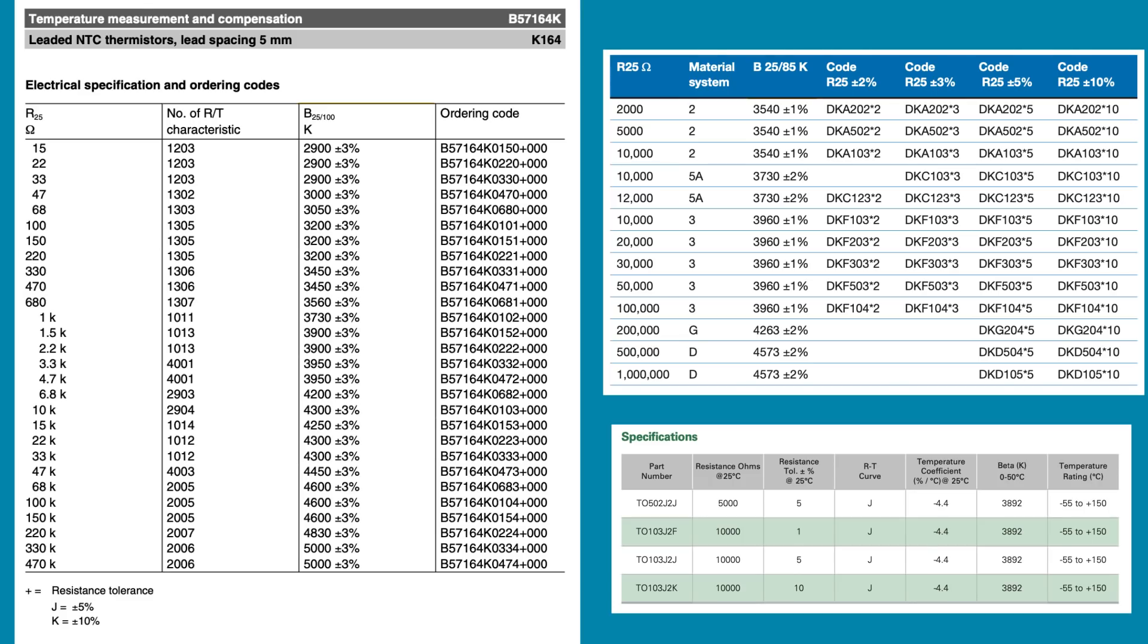On an NTC thermistor datasheet, you can find the beta value within a certain temperature range. Here are examples on datasheets that list beta values at temperature ranges of 0 to 50, 25 to 100, and 25 to 85.